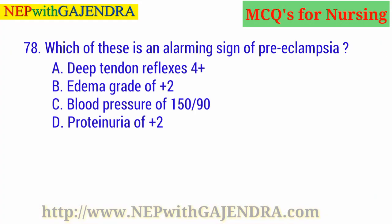Which of these is an alarming sign of preeclampsia? A. Deep tendon reflexes 4+. B. Edema grade of +2. C. Blood pressure of 150/90. D. Proteinuria of +2. The right answer is A: Deep tendon reflexes 4+.